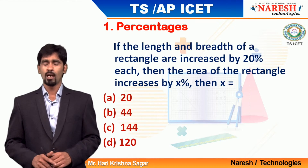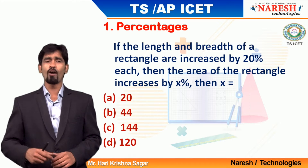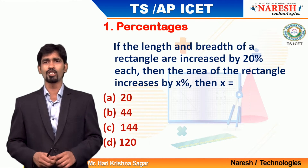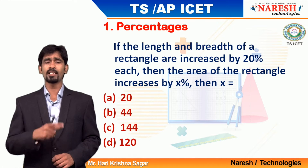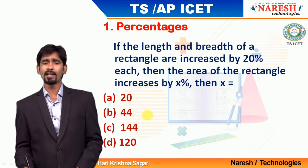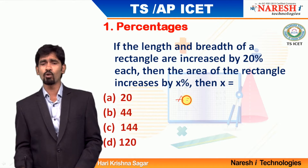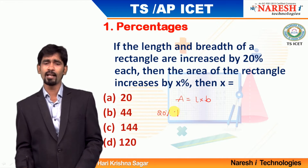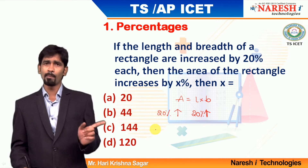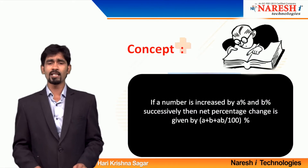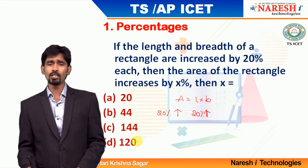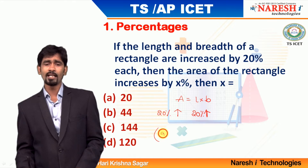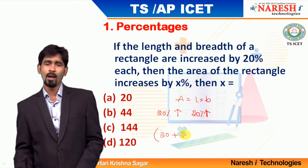Please observe question number 1. The length and breadth of a rectangle is increased by 20 percentage each. What is the percentage change in area of the rectangle? The formula for area is length into breadth. The increase in length is 20 percentage and the increase in breadth is 20 percentage. The overall increase will be given as A plus B plus AB by 100 percentage — that is 20 plus 20 plus 20 into 20 divided by 100.